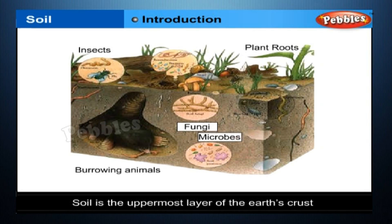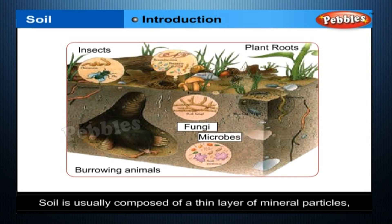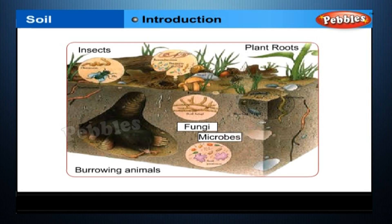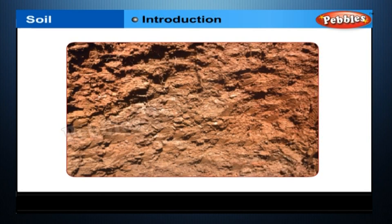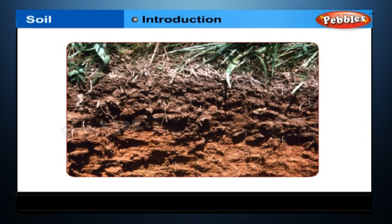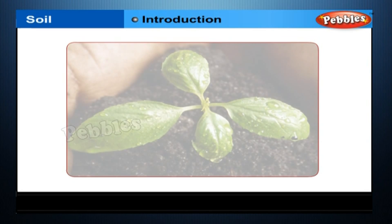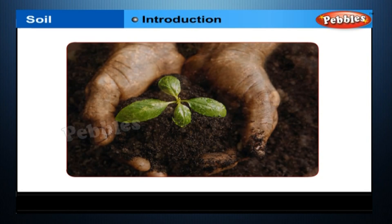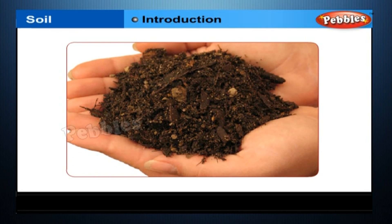Soil is the uppermost layer of the earth's crust and is usually composed of a thin layer of mineral particles and a layer of dead and decayed plant and animal remains called humus. However, soil does not have the same properties everywhere and therefore supports different varieties of plants in different areas. That is why we have some states growing more of a particular crop than others and not as much of some other crop.